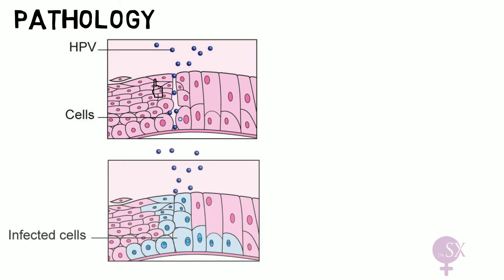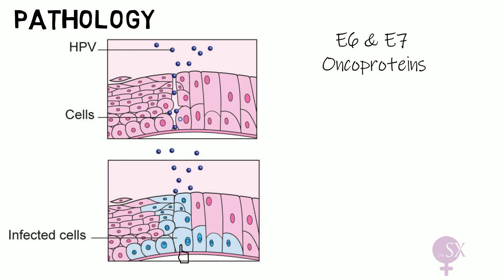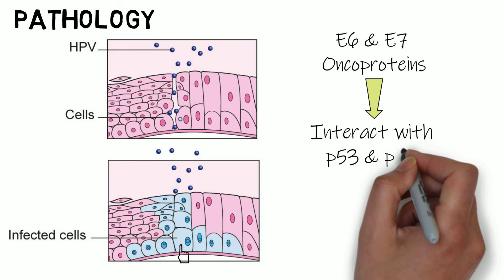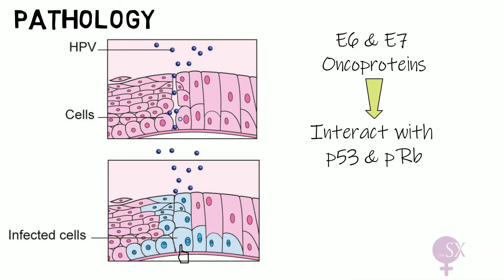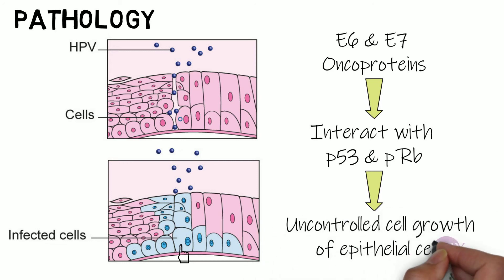HPV enters through a break in the epithelium, making its way to the basal layer and infecting the basal cells of the epithelium, where it begins to replicate. HPV then produces oncoproteins E6 and E7. These proteins interact with tumor suppressor genes p53 and retinoblastoma protein PRB. As aptly named, these tumor suppressor genes prevent the formation of tumors. In the presence of these oncoproteins, there is uncontrolled abnormal growth of epithelial cells which may eventually result in cancer.